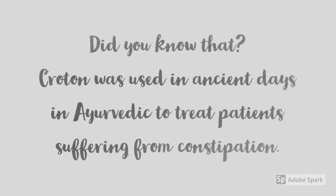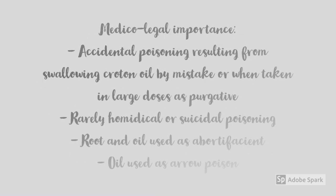Croton tiglium is also known as Jamal Gotha in Hindi. Its seeds have purgative properties, because of which they were used in ancient Ayurvedic medicine to treat patients suffering from constipation. The fact that its seeds contain purgative properties explains why croton poisoning presents with excessive purging.